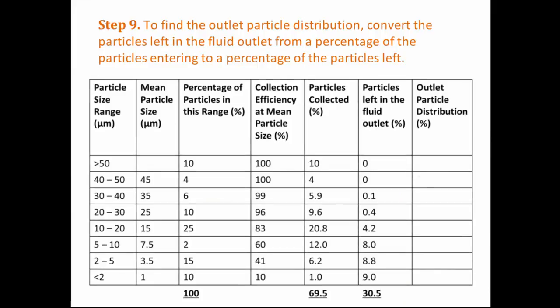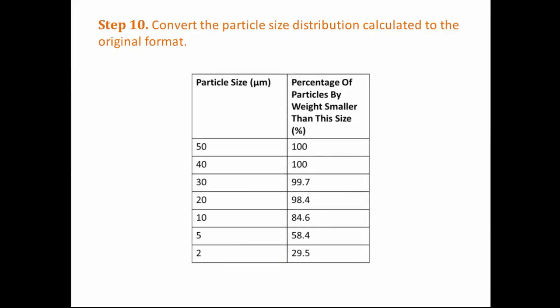To find the distribution of particles left in the dry event, we convert the fluid outlet column to percentage form by dividing each number by the total and multiplying by 100. For example, for particles smaller than 2 micrometres: 9 divided by 30.5 times 100 equals 29.5%. So 29.5% of particles in the fluid outlet are smaller than 2 micrometres. We repeat this for the whole column. To convert these back to the cumulative format of the original question, we start from the bottom and add up each percentage cumulatively, giving values like 29.5% plus 28.9% equals 58.4%.